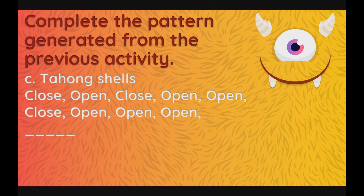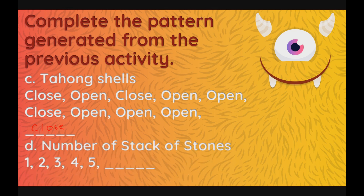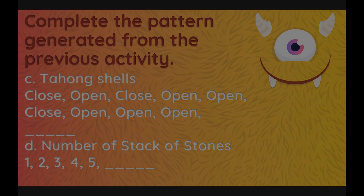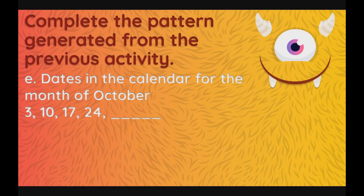How about the tahong shells? We have close, open, close, open, open, close, open, open, open. The next will be close. Very good. And how about the number of stacks of stones? The next number will be 6. For the last one, we have the dates of the calendar for the month of October. We have 3, 10, 17, 24, and the last one will be... very good, 31.